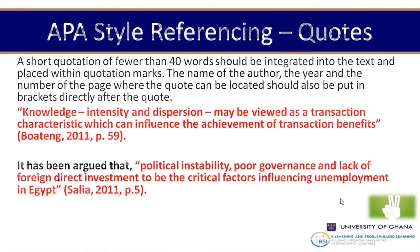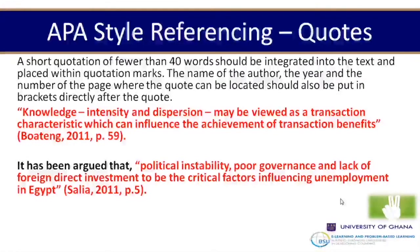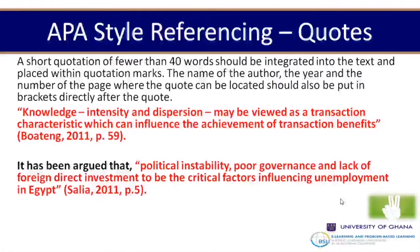Let's see what APA style entails within the text. We'll start by looking at quotations. A quotation of fewer than 40 words should be integrated into the text. Quotations are sentences picked verbatim from a particular person's work and replicated in your work. If it is fewer than 40 words, you put quotation marks, and include the author name, year, and page number — for example, Barton comma 2011 page 959.